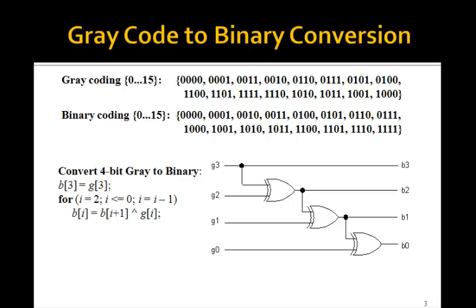We saw last time that 4-bit gray code to 4-bit binary could be implemented using this circuit with 3 exclusive OR gates, which implements this algorithm. You might think we could just use a VHDL for loop, as we did in the previous lesson, to implement this circuit.